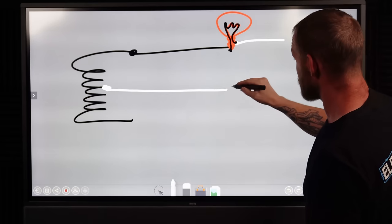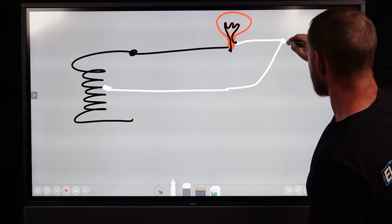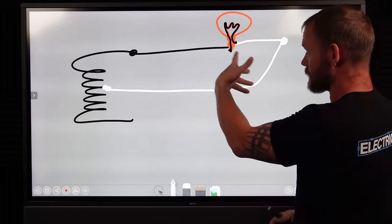That is a way that you can get shocked between two neutrals. Now, if you were to take yourself out of the equation and just connect these two together and put a wire nut on them, the light's going to turn on. That's a complete circuit.